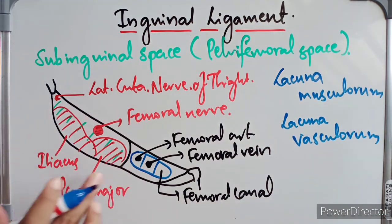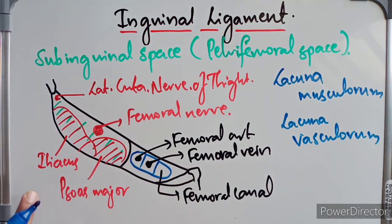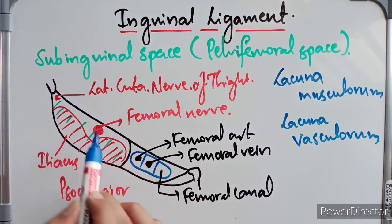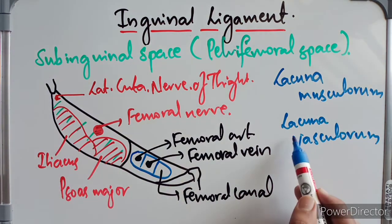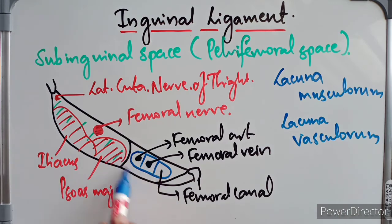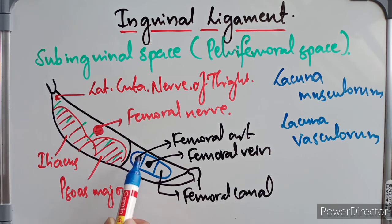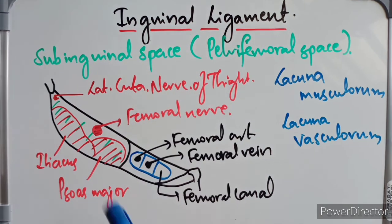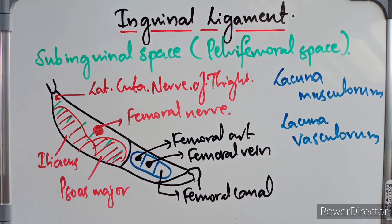The lacuna musculorum is the larger chamber and contains the iliacus, psoas major, the lateral cutaneous nerve of the thigh, and the femoral nerve. The lacuna vasculorum is also called the femoral sheath, divided into three compartments: the lateral compartment contains the femoral artery, the middle compartment contains the femoral vein, and the medial compartment is the femoral canal which lodges lymph nodes.